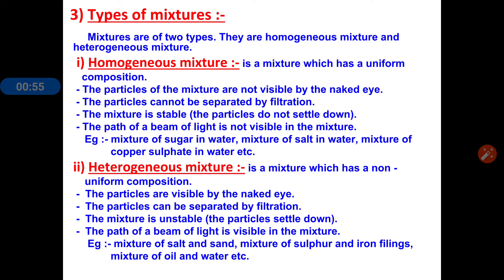First we will see about the homogeneous mixture. A homogeneous mixture has a uniform composition, meaning we are unable to see the particles with the naked eye. The mixture is uniformly composed — we can see only one type throughout the whole mixture. We cannot separate this mixture by the process of filtration.